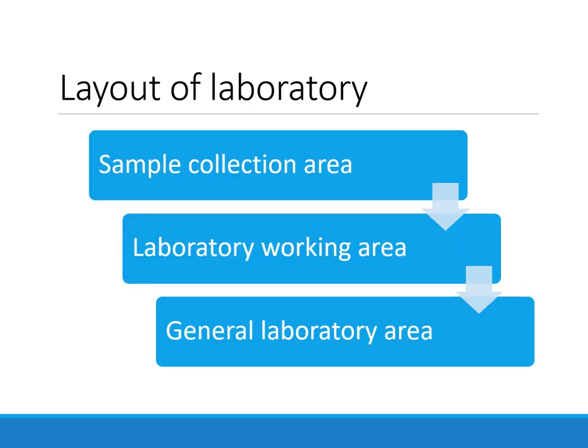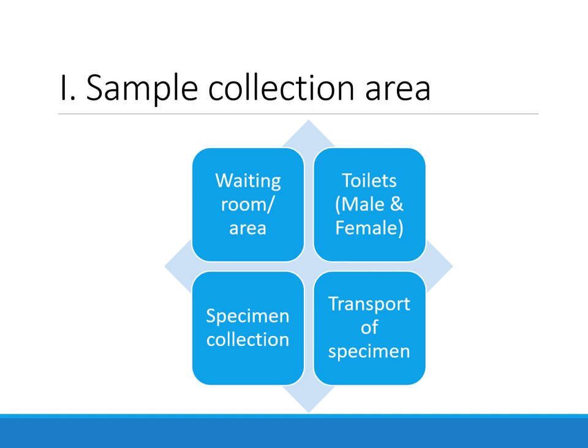The layout of a laboratory may be divided into three broad areas: the sample collection area, the main laboratory working area, and the general laboratory area. Each of these areas is further divided into constituent rooms. The specimen collection area should consist of a waiting room where patients may be seated while they wait for phlebotomy, separate toilets for male and female patients, a specific specimen collection area for phlebotomy, and an area to arrange and pack specimens for transport to different laboratories in case of a common specimen collection center.